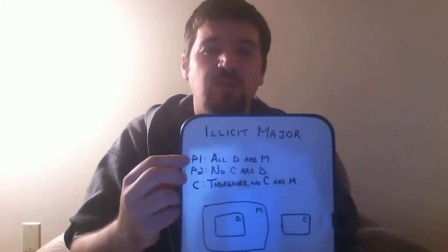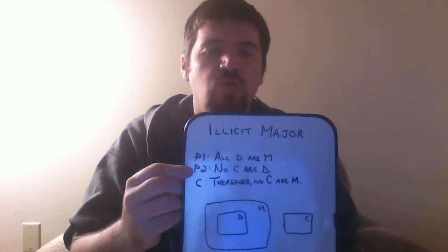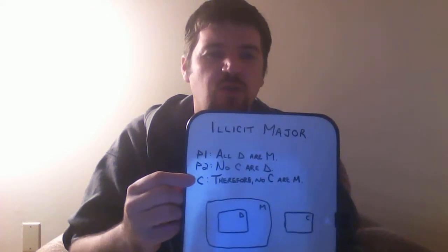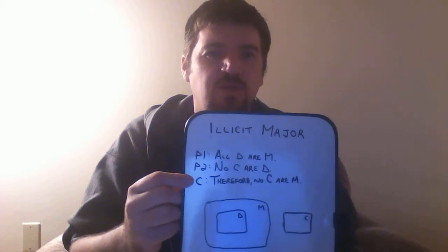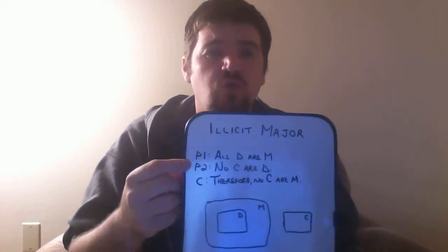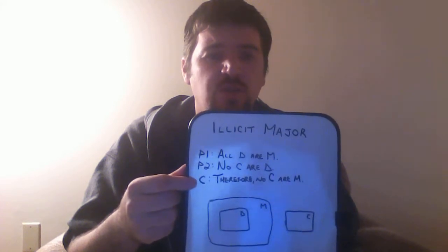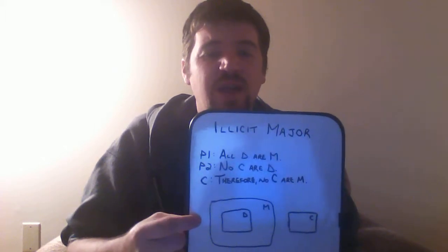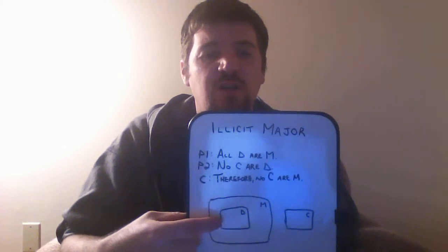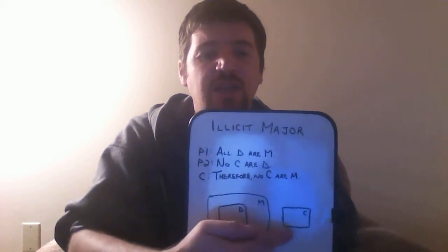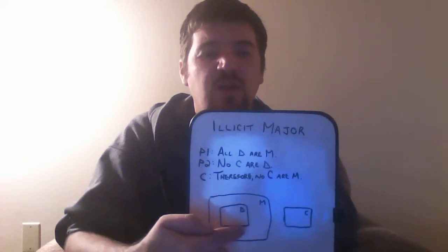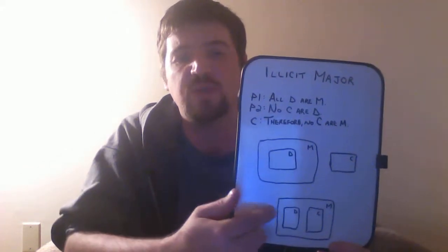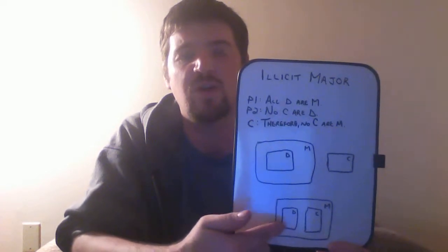Premise 1: all dogs are mammals — true. Premise 2: no cats are dogs — also true. Conclusion: therefore, no cats are mammals — false. So if we have two true premises and they don't necessarily lead to the conclusion, then there must be something wrong with the form. What it's implying is that the group of all dogs is within the group of all mammals, but because cats don't overlap with dogs, it must not overlap with mammals either. Where we know the truth is that the group of mammals includes both cats and dogs that don't overlap.